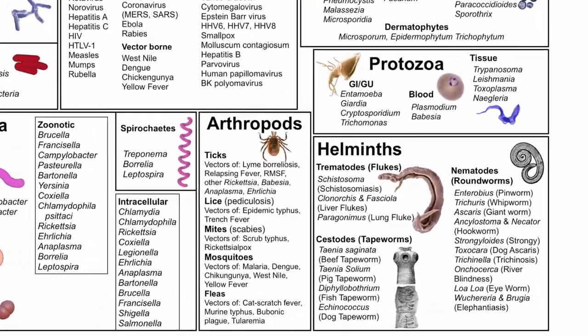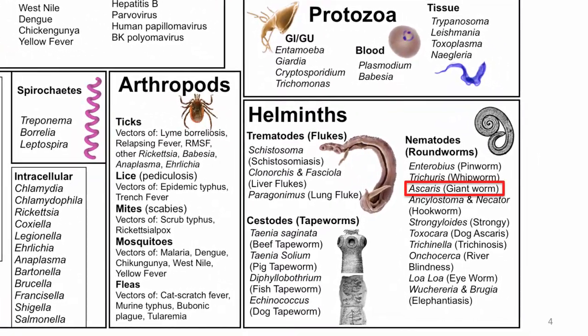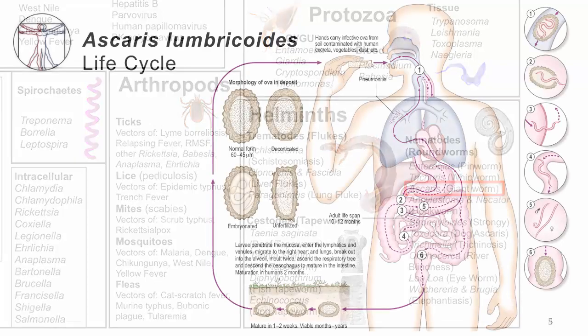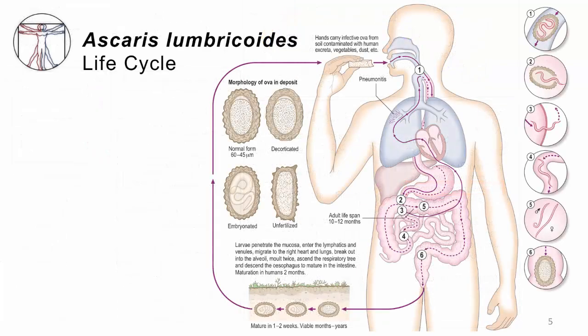Here we are on the tree of life. Ascaris lumbricoides is one of the GI nematodes, and this is the life cycle. It begins at the bottom of the screen where there are eggs that mature in the soil. They're deposited there by people who defecate in the ground because they don't have another choice, and in the feces are eggs.